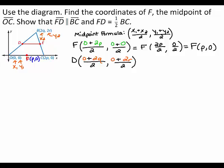When you simplify, 0 plus 2q gives you 2q, and 0 plus 2r gives you 2r. 2q divided by 2 gives you q, and 2r divided by 2 gives you r. So, the coordinates of D are (q, r).